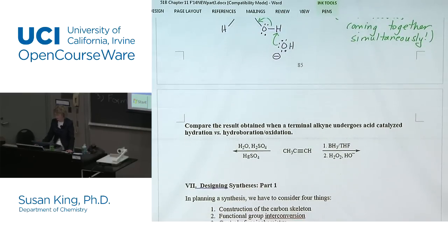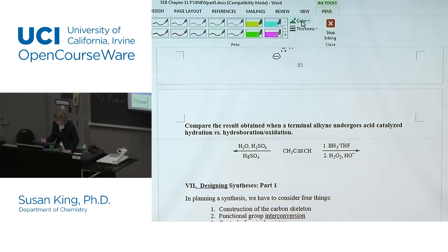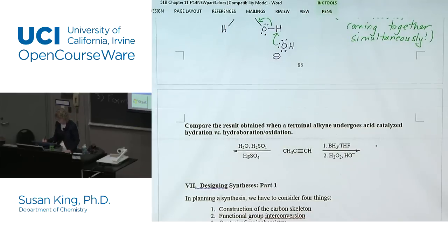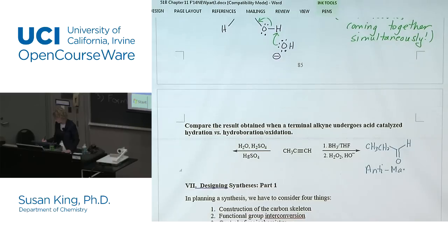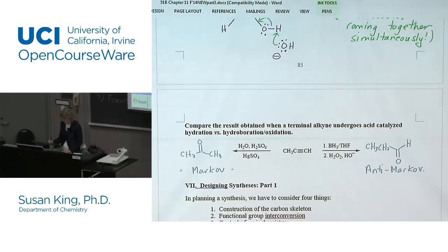Compare the result when a terminal alkyne undergoes acid-catalyzed hydration versus hydroboration. One is anti-Markovnikov and one is Markovnikov. Remember, where the oxygen goes is where the carbonyl is going to be — hydroboration gives you anti-Markovnikov, and hydration gives you Markovnikov. It's really nice that we have these complementary procedures, giving us two ways to control regiochemistry for synthesis.